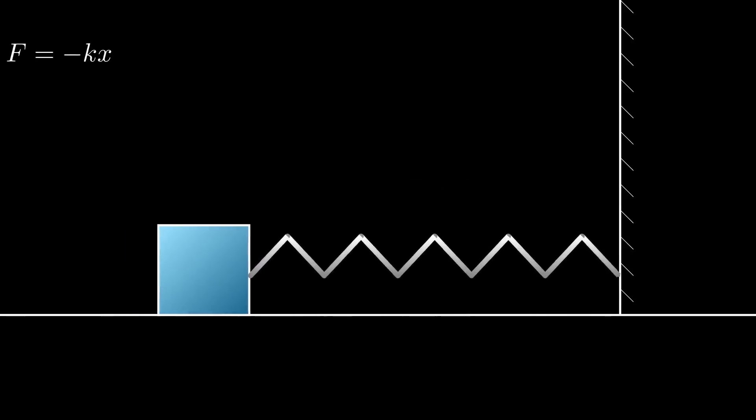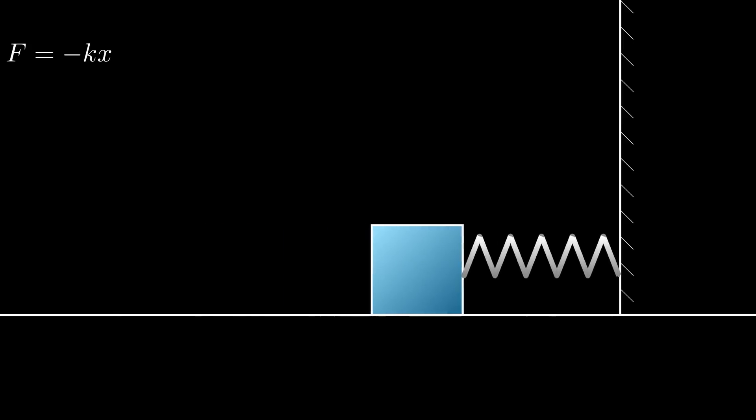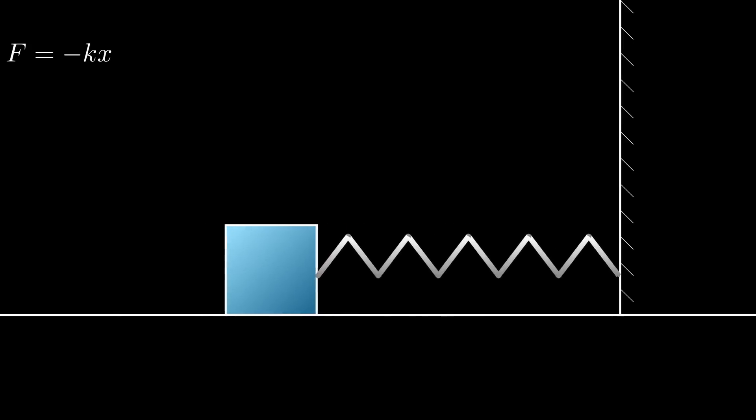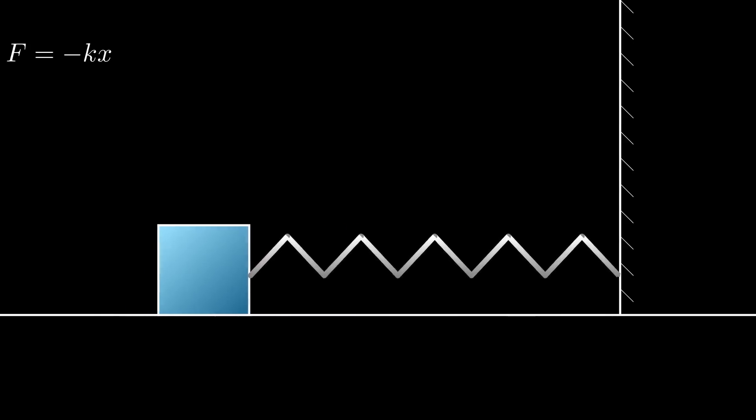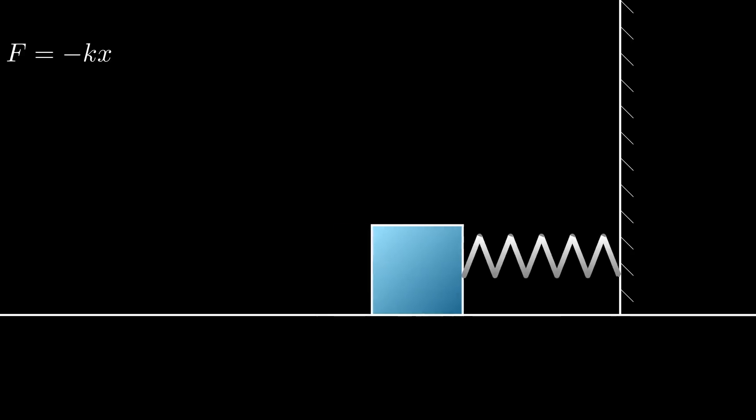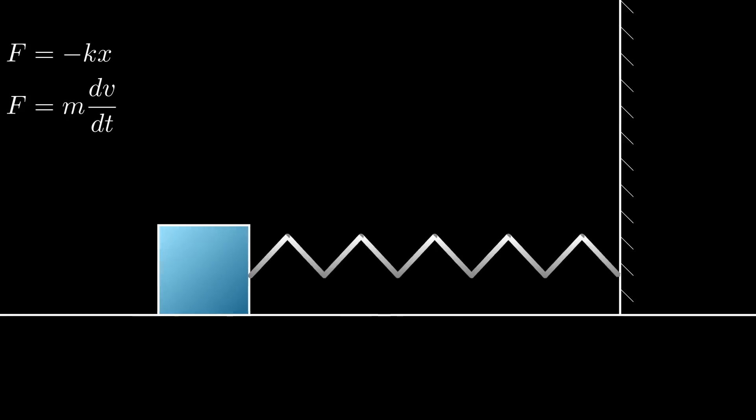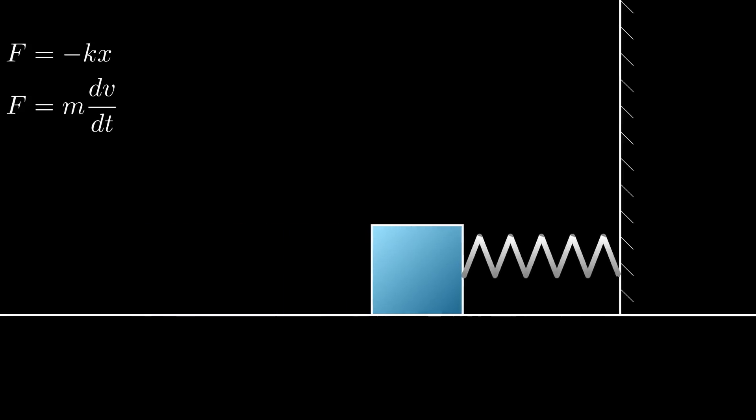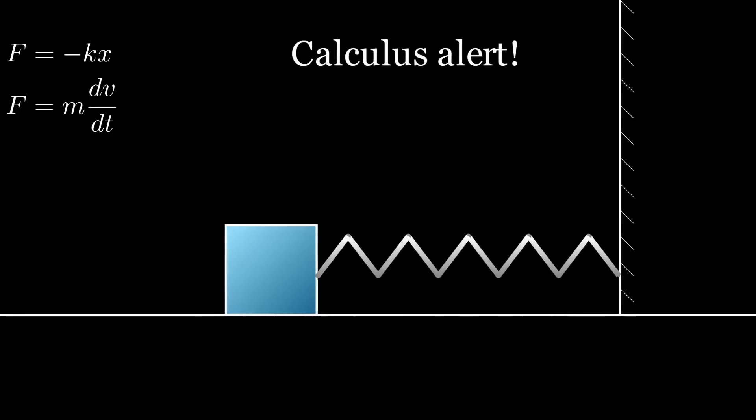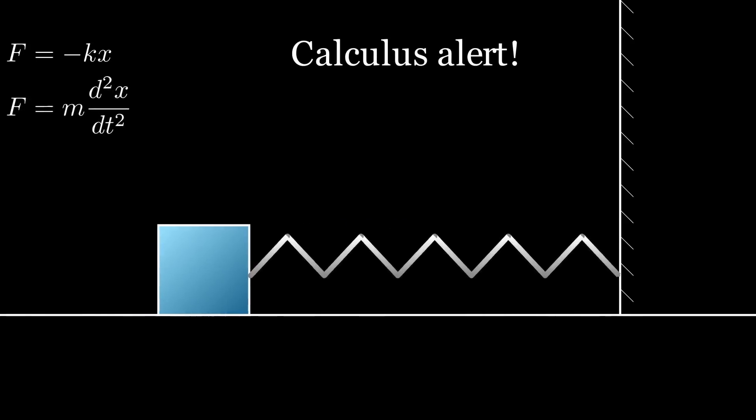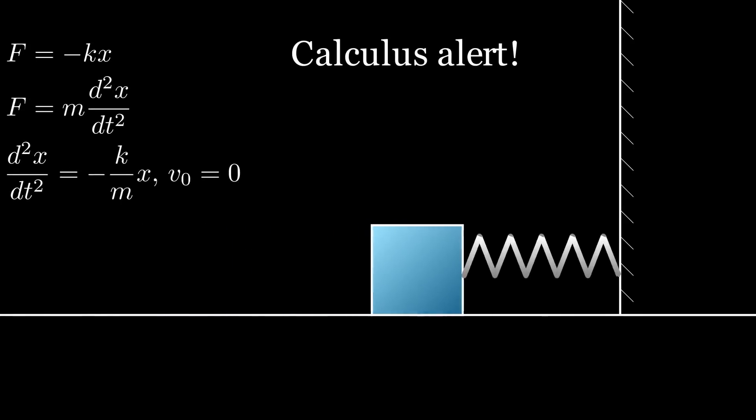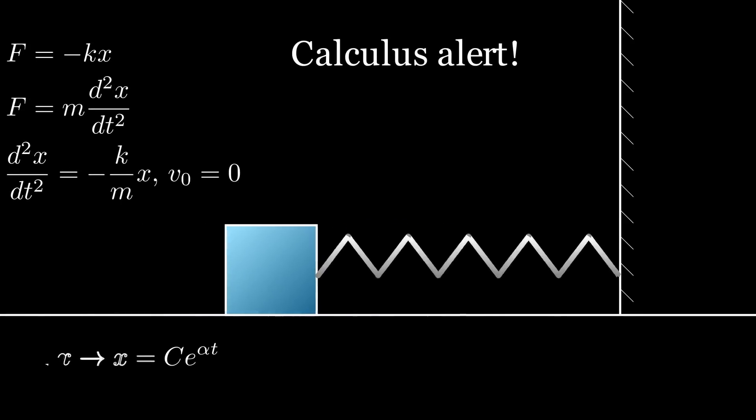The mathematical equation for this is F = -kx, where k is the spring constant and x is the displacement from equilibrium. And of course, F = ma. Or more properly, F = m dv/dt. We can solve the differential equation to find out the block's motion, and it turns out to be a sine function.